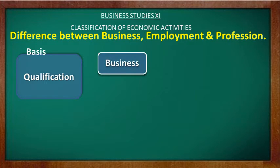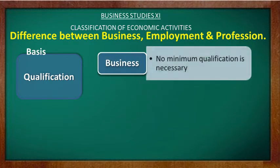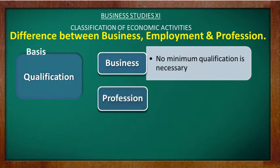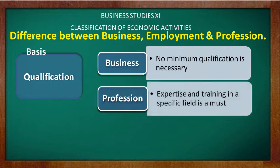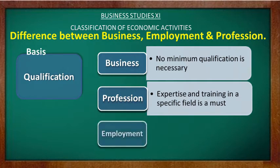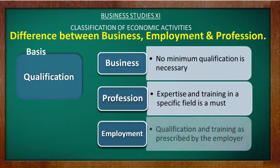The next basis of difference is qualification. In business, no minimum qualification is required — anyone can start a business without having any qualifications. In profession, special training or specialized knowledge in a particular field is mandatory. In employment, the qualification and training are prescribed by the employer and are required for the job.